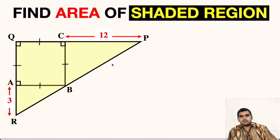Welcome to my YouTube channel. Once again, I am back with an interesting question today. In the figure shown, triangle PQR is a right angle triangle at vertex Q. ABCQ is a square. We are asked to find the area of shaded region.